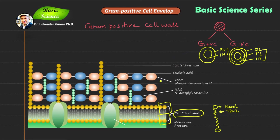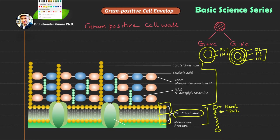In the gram positive structure you can see the peptidoglycan layer including lipoteichoic acid, and the membrane part. These are the two layers. The different components of this structure will now be covered one by one.